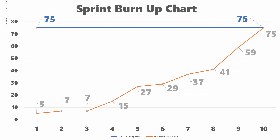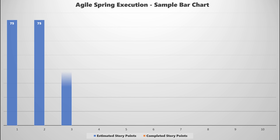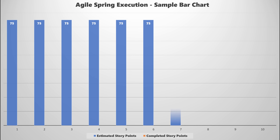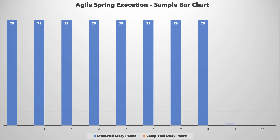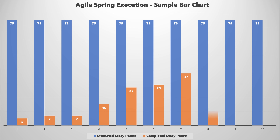If you look at the sample, you can see that 75 story points were estimated, and then the completion over the period of 10 business days were 5, 7, 7, 15, 27, 29, 37, 41, and 59.